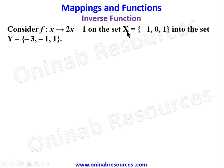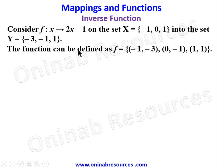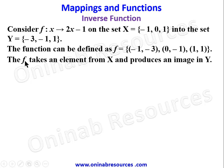Consider f(x) = 2x - 1 on the set x such that x is the set of {-1, 0, 1} into the set y = {-3, -1, 1}. The function can be defined as a set of ordered pairs: (-1, -3), (0, -1), and (1, 1). So f takes an element from x and produces an image in y. The image of -1 is -3, the image of 0 is -1, and the image of 1 is 1.